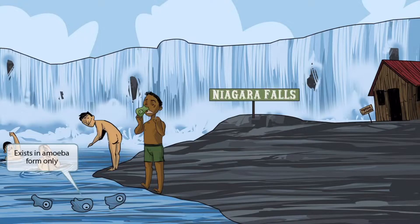Unfortunately for these yahoos, the water is infested by Naegleria fowleri. You can see these amoebas swimming around in the water here. Interestingly, Naegleria only exists in the amoeba form — it never forms a cyst. For that reason, in our image we only show the amoeba form, which is the only form it has.